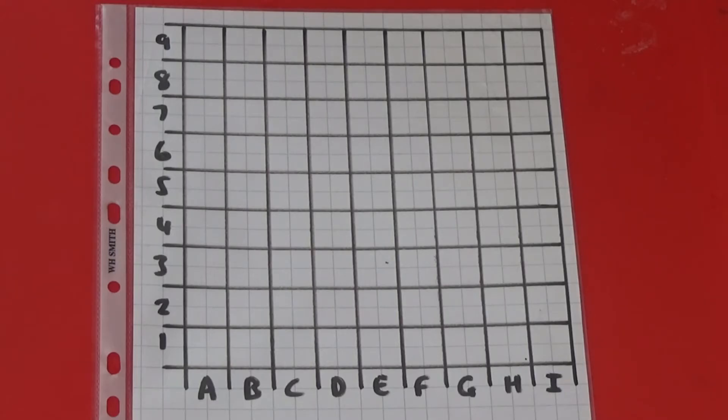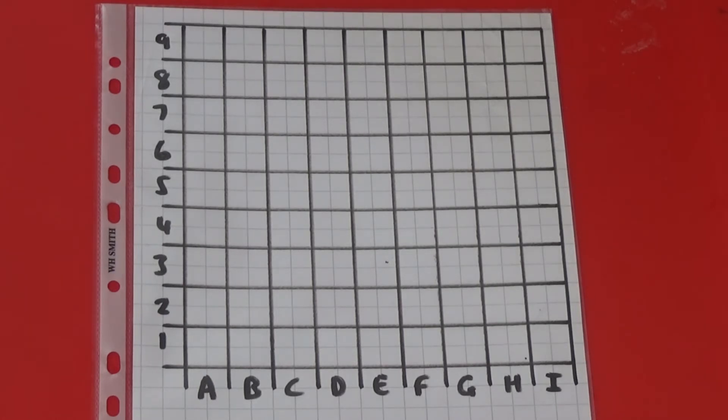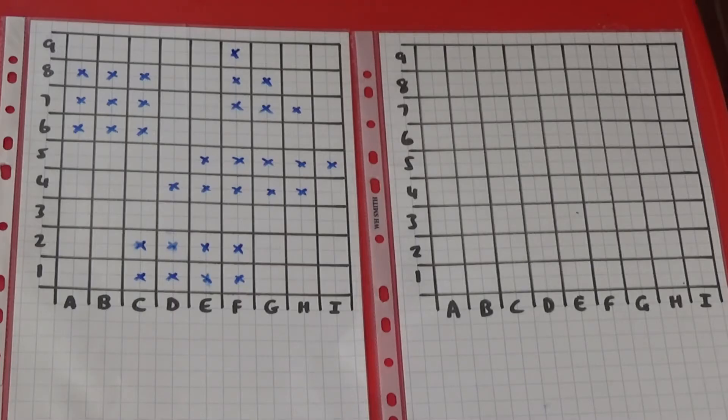Each player takes turns to call out a grid reference. If I call out a grid reference my partner has marked with an X, I put an X on my own sheet. If I call out one that my partner doesn't have an X in, I mark it so I don't accidentally call out the same grid reference twice. I'm going to use both my grids to show you how it works.